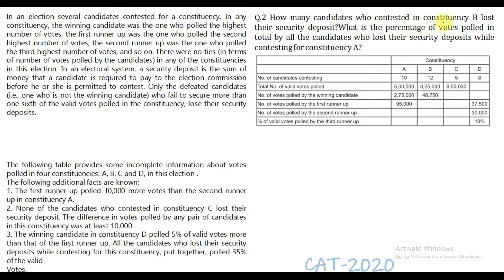Question 2: How many candidates who contested in constituency B lost their security deposit? All 12 of them got less than one-sixth of the total valid votes, but one of them has to be the winner. The winner does not lose his security deposit even though he did not get more than one-sixth of the votes. The remaining 11 people got less than one-sixth of the valid votes, so all of them are going to lose their security deposit. The answer is 11.